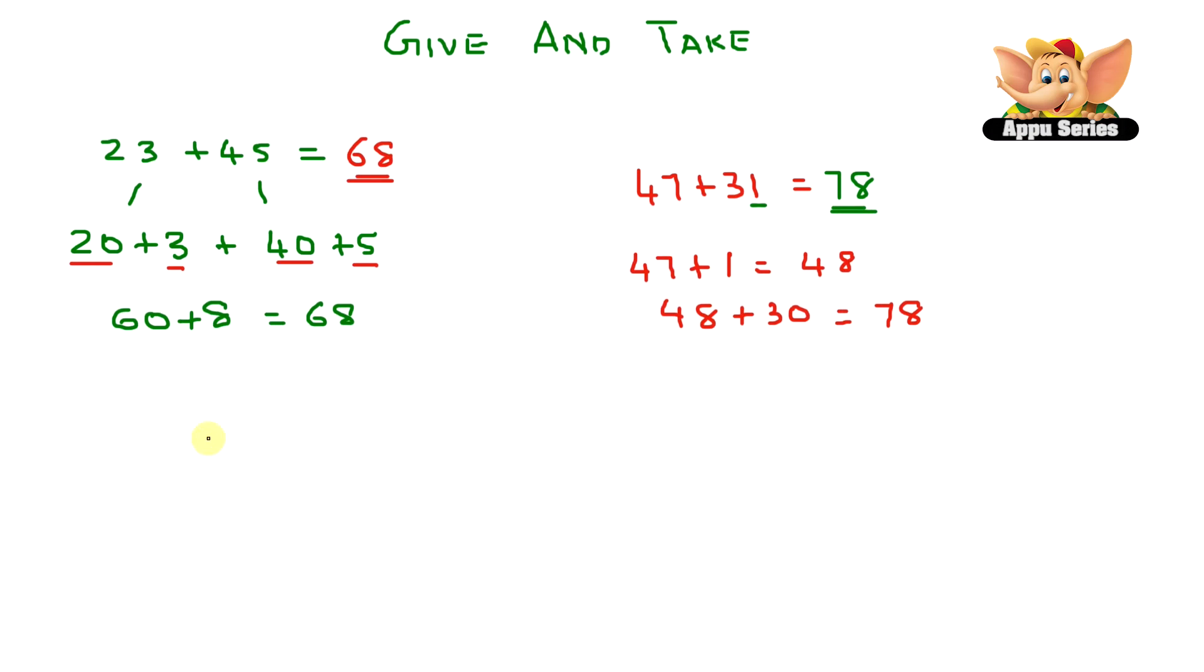Okay, let me show you one more. 32 plus 68 equals? To make the calculation faster, add 2 from 32 to 68. So 68 plus 2 equals 70. And 70 plus 30 equals 100. See how fast that was?